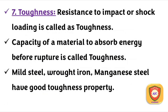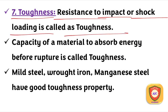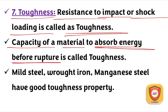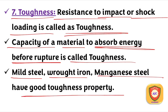Toughness is the capacity of a material to absorb energy before rupture under impact or sudden shock loading. Tough materials include mild steel, wrought iron, and manganese steel, which have good toughness properties.